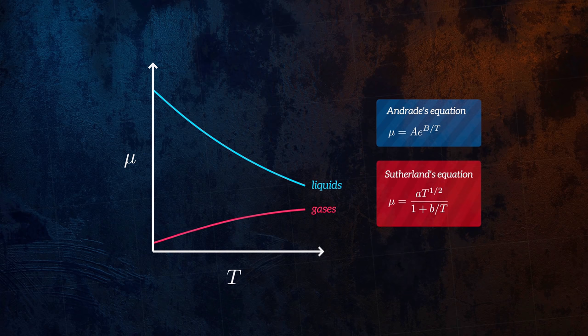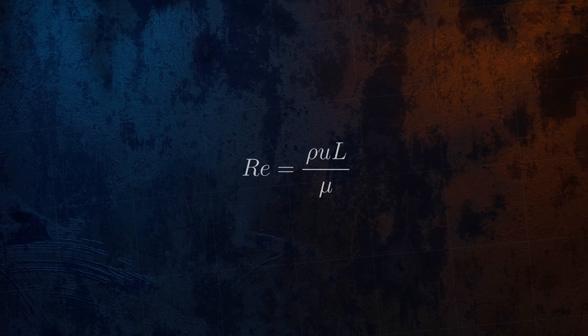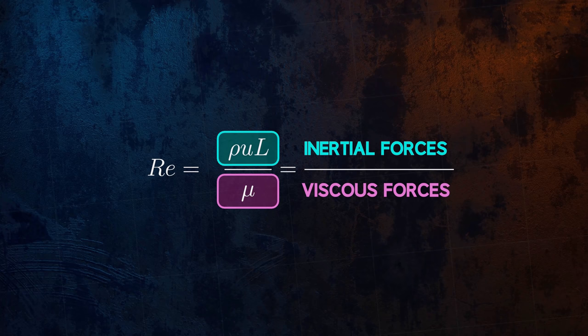Because it fundamentally affects how fluids behave, viscosity is a very important parameter in fluid mechanics. It appears in the equation for Reynolds number, for example, and so affects whether flow is likely to be laminar or turbulent.